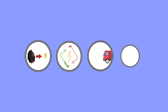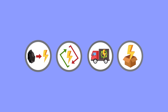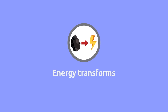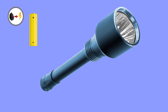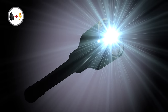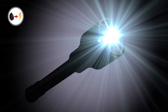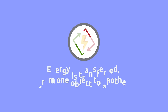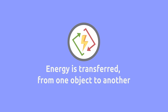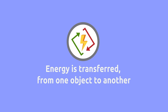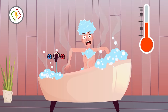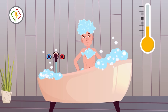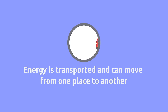Energy possesses four fundamental properties. First, energy transforms — for example, when we use a battery for a flashlight, the chemical energy in the battery transforms into electric energy. Second, energy is transferred from one object to another — for example, when we mix hot and cold water, thermal energy passes from the hot water to the cold water.